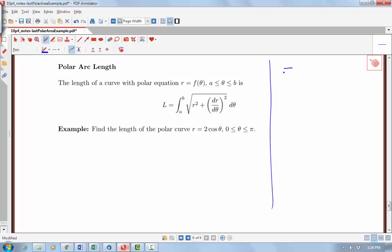So for y equals f of x with f prime continuous, we had that the arc length over an interval from a to b involved integrating the square root of 1 plus the derivative squared, dx.